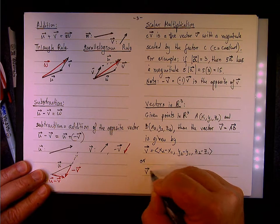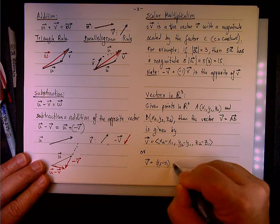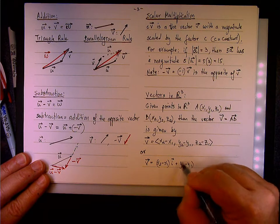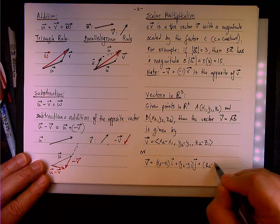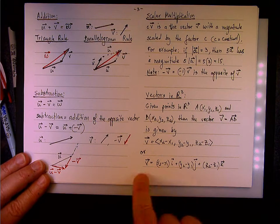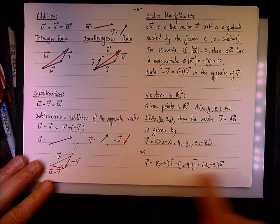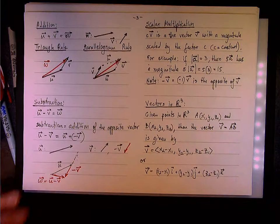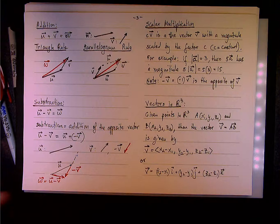We can write it in this notation, or if we write it in i, j, k notation, we can write it as (x₂ - x₁)i + (y₂ - y₁)j + (z₂ - z₁)k. The convenience of this second notation is that you write it as an algebraic sum, because you add vectors in three different directions, and that gives you the vector itself.